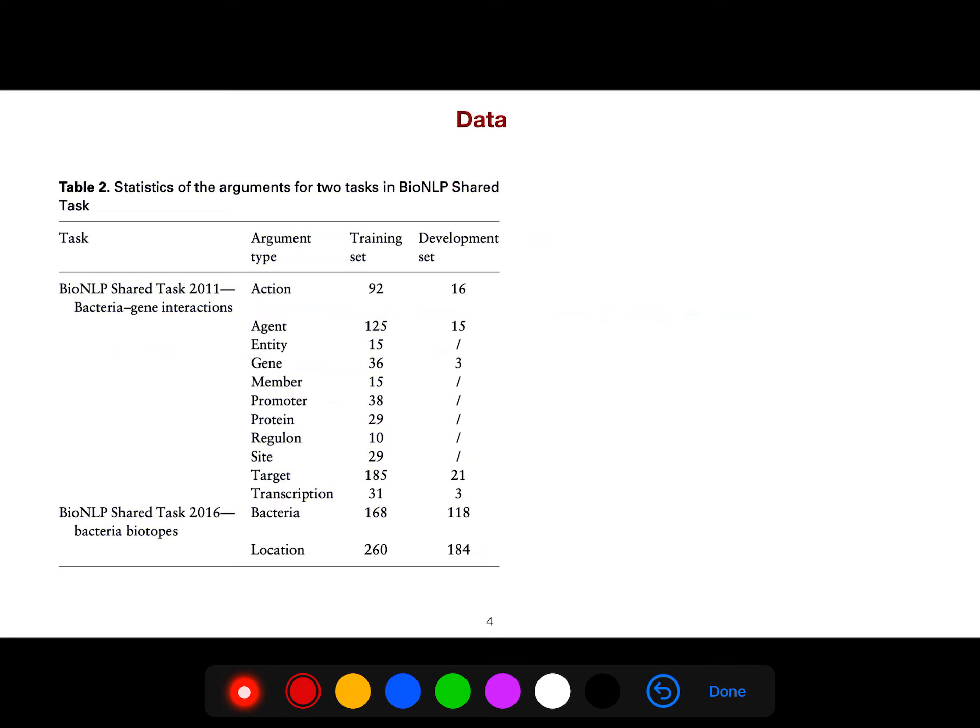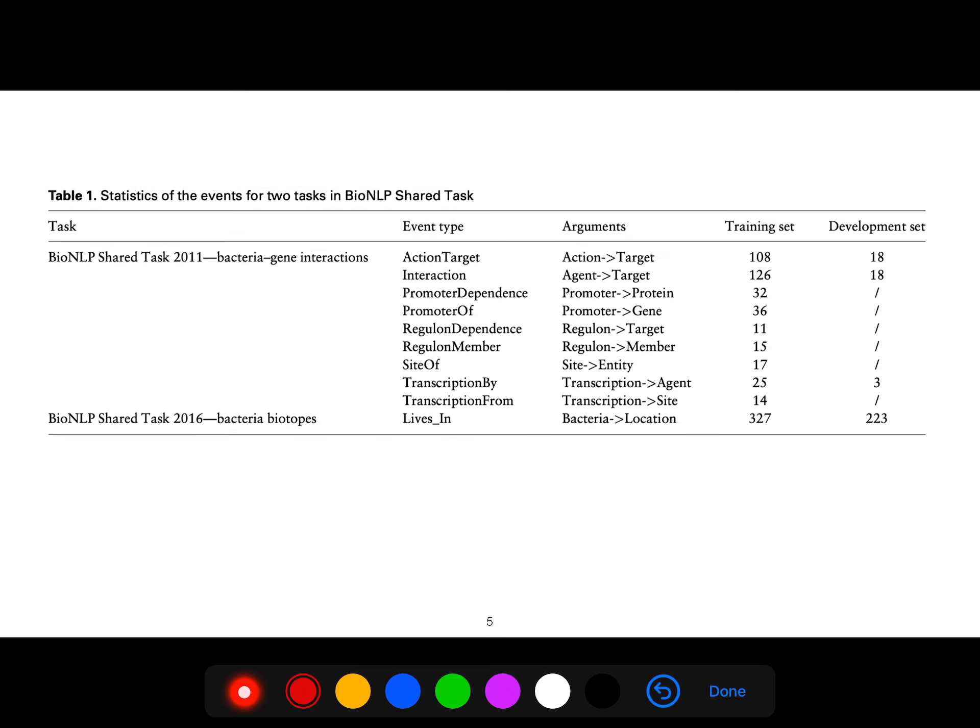This is the statistics of the arguments for two tasks in bioNLP shared tasks. For example, for argument type protein, we have 29 training sets. Or for location, we have 260 in bioNLP 2016. And these are important data sets for biomedical domain in biomedical text.